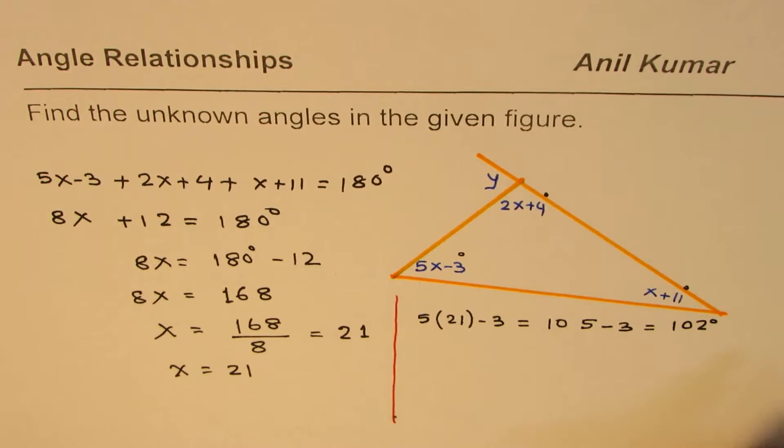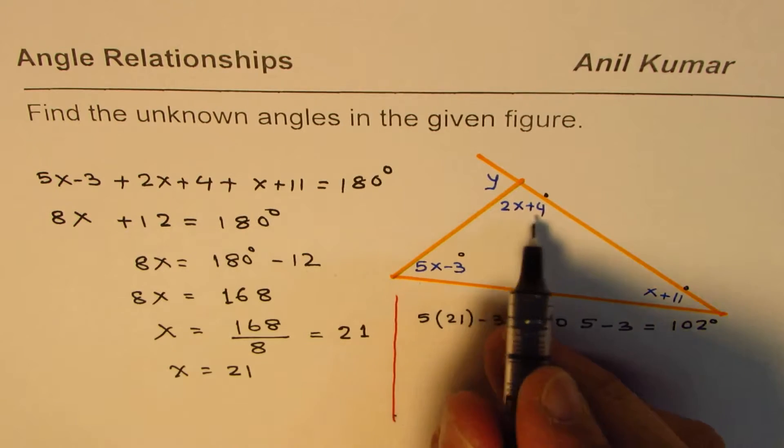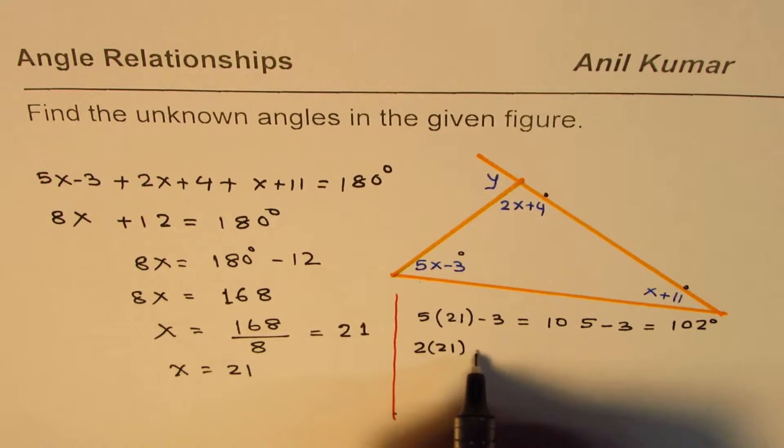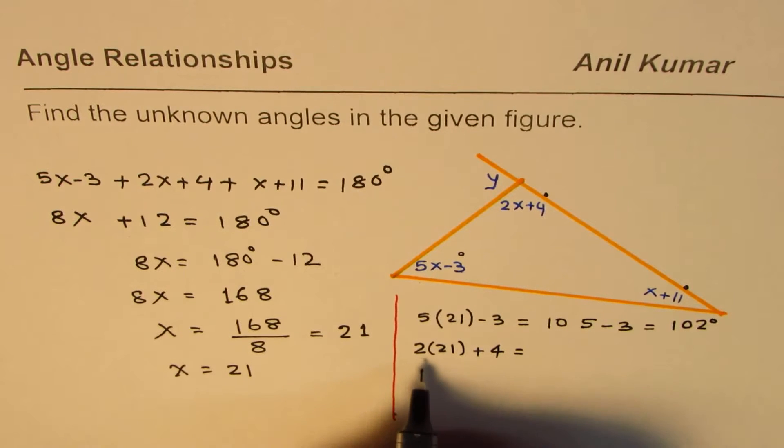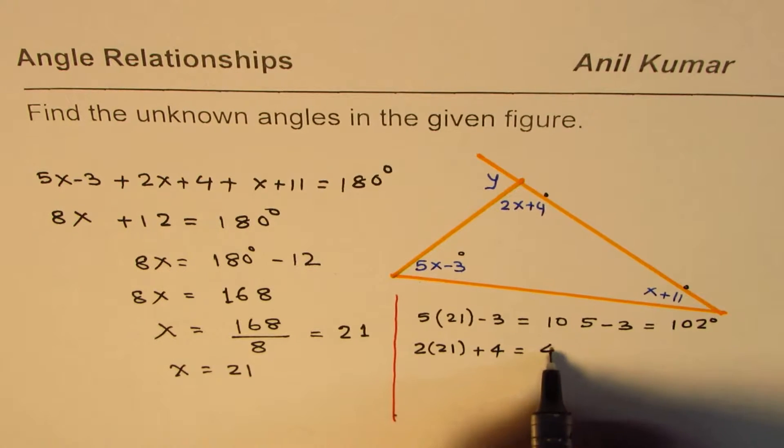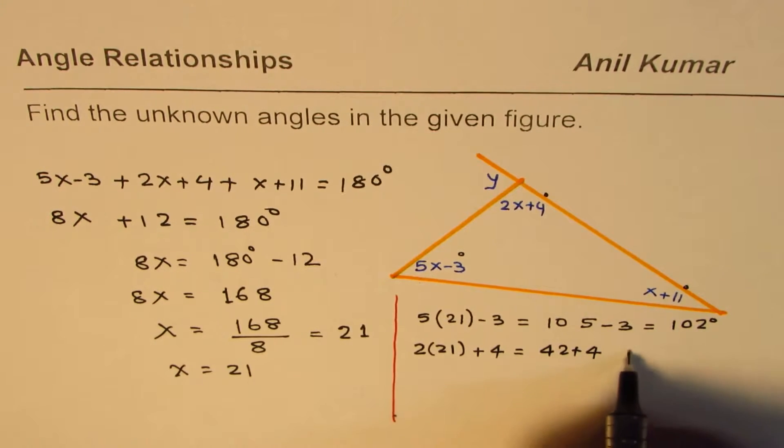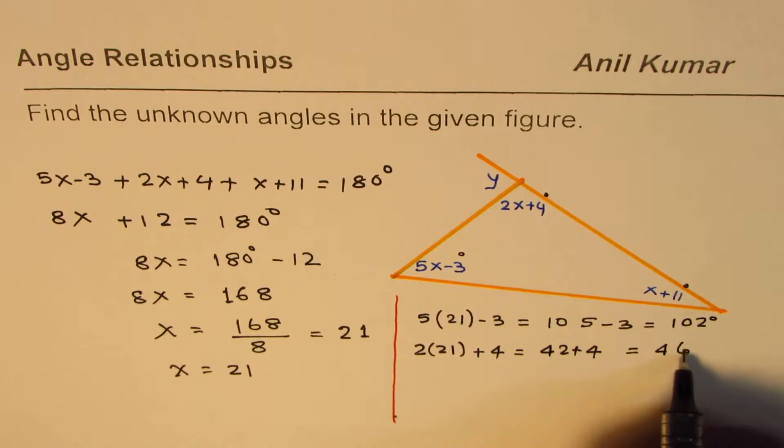5x minus 3. And then we have 2x plus 4, so it is 2 times 21 plus 4, which is 42 plus 4, which is 46 degrees.